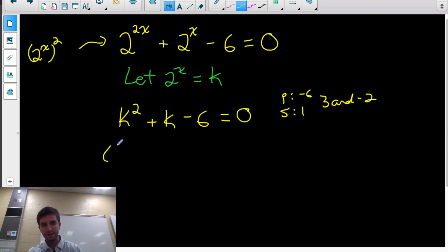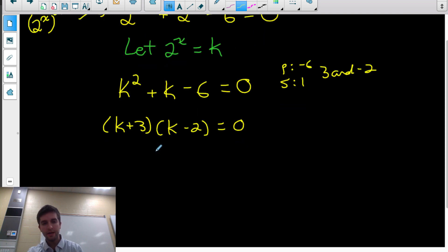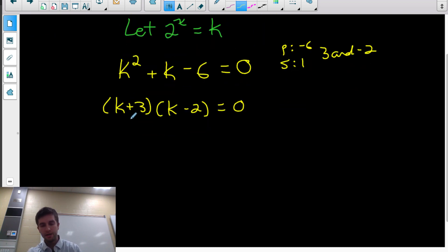So we can go ahead and factor this into k plus 3 times k minus 2 equals 0. And the zero product rule tells me for the product to be 0, one of these factors would have to be 0. So either k plus 3 would have to be 0, or k minus 2 would have to be 0. So k would be negative 3 or 2.